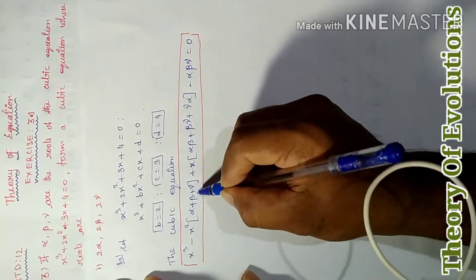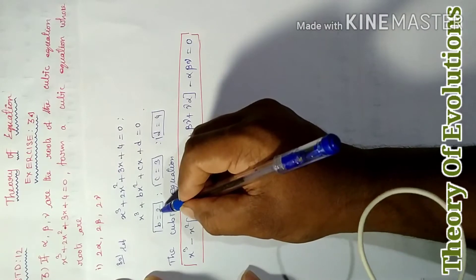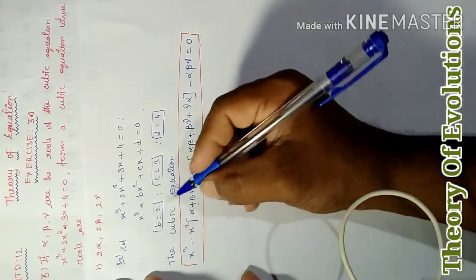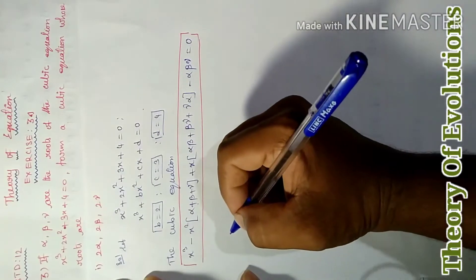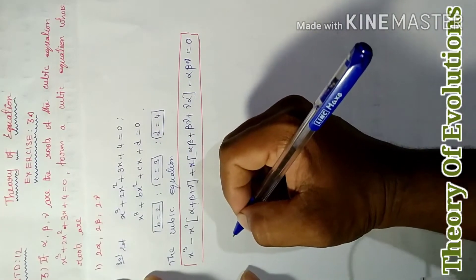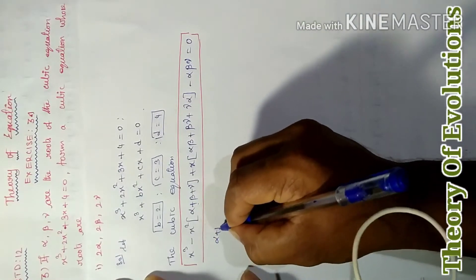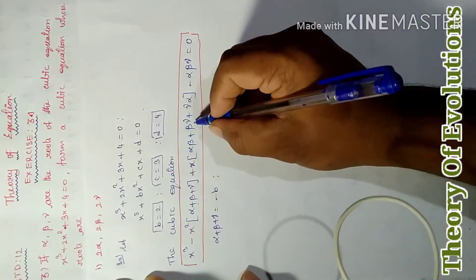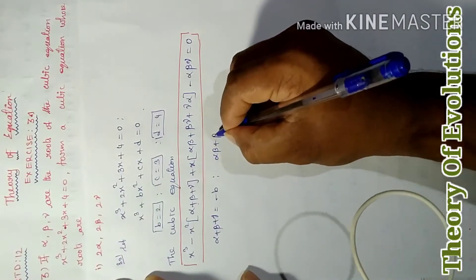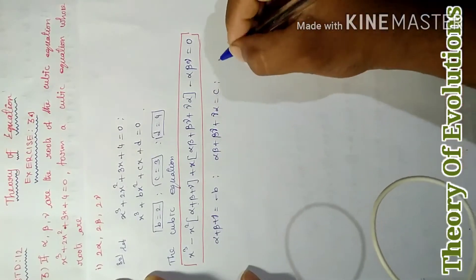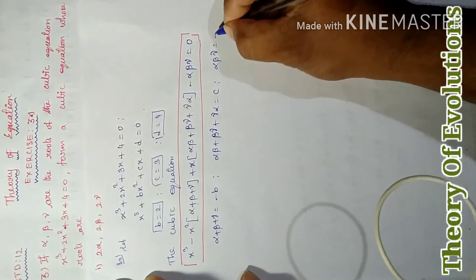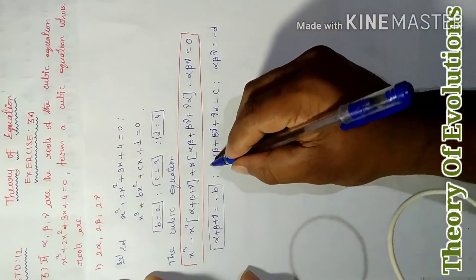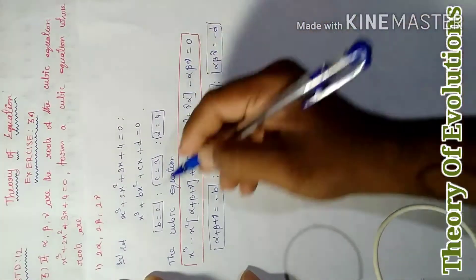Now, using Vieta's formulas: sum of roots α + β + γ = −b = −2. Sum of products of pairs αβ + βγ + γα = c = 3. Product of roots αβγ = −d = −4.